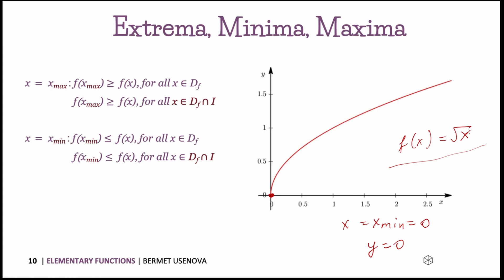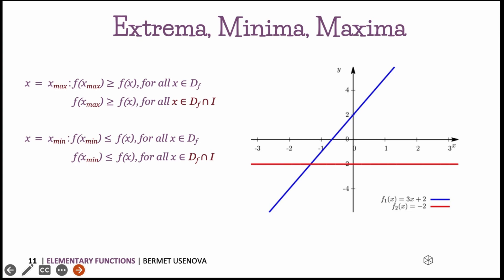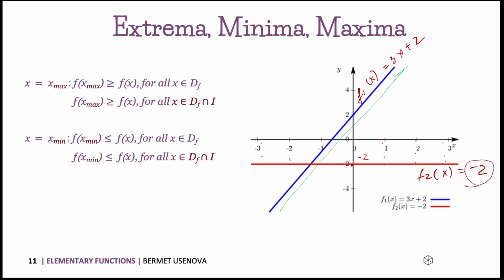Local and global maxima and minima are collectively called extrema. Let's look at two more examples: f1 of x equals 3x plus 2, and f2 of x equals minus 2. Since f1 is a straight line, it has no global extreme values. The constant function f2 equals minus 2 always outputs minus 2 regardless of x, so minus 2 is both the minimum and maximum value of that function.